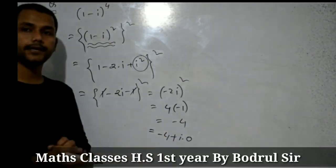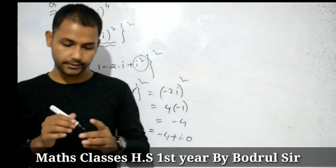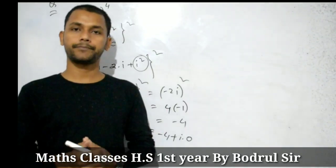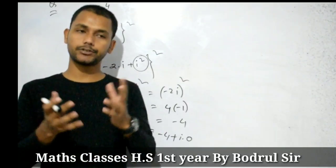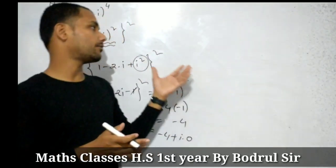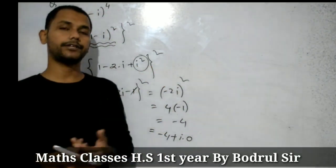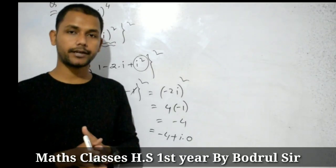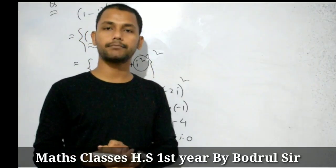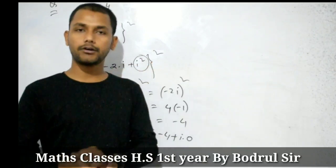So this can be written as minus 4 plus i times 0, which is the standard form a plus ib. Students, as you can see this is the complex number in standard form. In the next video, we will see the definition of the modulus of a complex number and arguments of a complex number. And before that, we will cover the algebra of complex numbers. See you next time, bye.